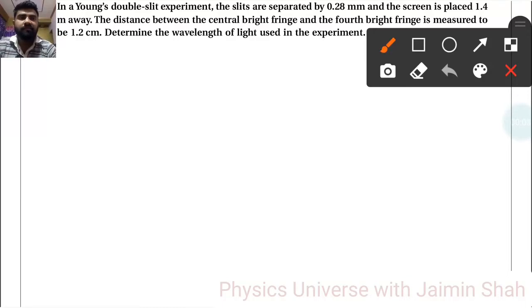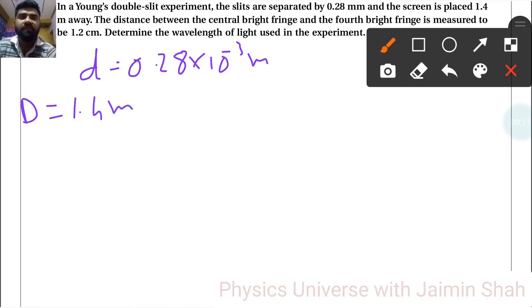In Young's double-slit experiment, the slits are separated by d = 0.28 × 10⁻³ meters, and the screen is placed at D = 1.4 meters. The distance between the central bright fringe and the fourth bright fringe (n = 4) is measured to be 1.2 × 10⁻² meters. Determine the wavelength of light used in the experiment.